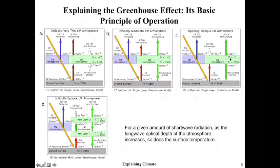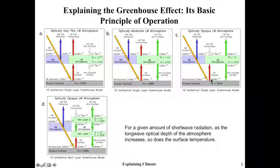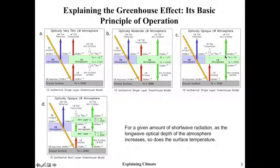If we increase the optical depth to 15 — getting closer to saturation — the ground temperature increases to 303 Kelvin, emitting 480 watts, following the Stefan-Boltzmann law sigma T to the fourth. The atmosphere must emit 240 watts up to space and 240 watts down. So the 480 watts from the ground comes from solar radiation of 240 watts plus 240 watts from the atmosphere, with 240 watts going out to space. That's a simple one-layer model where radiation is constrained within that layer with no other form of energy transport.